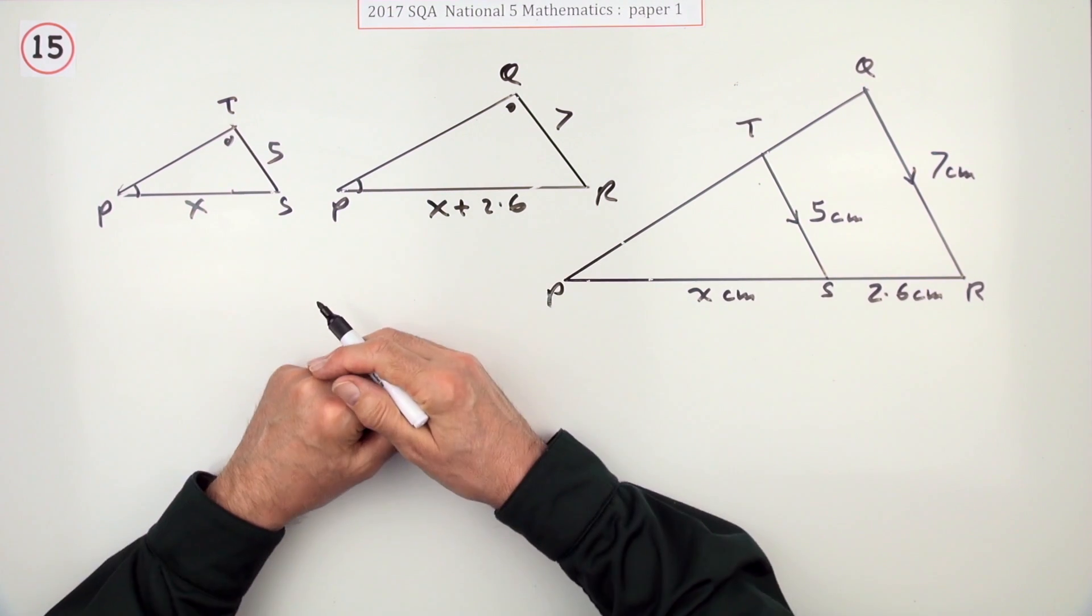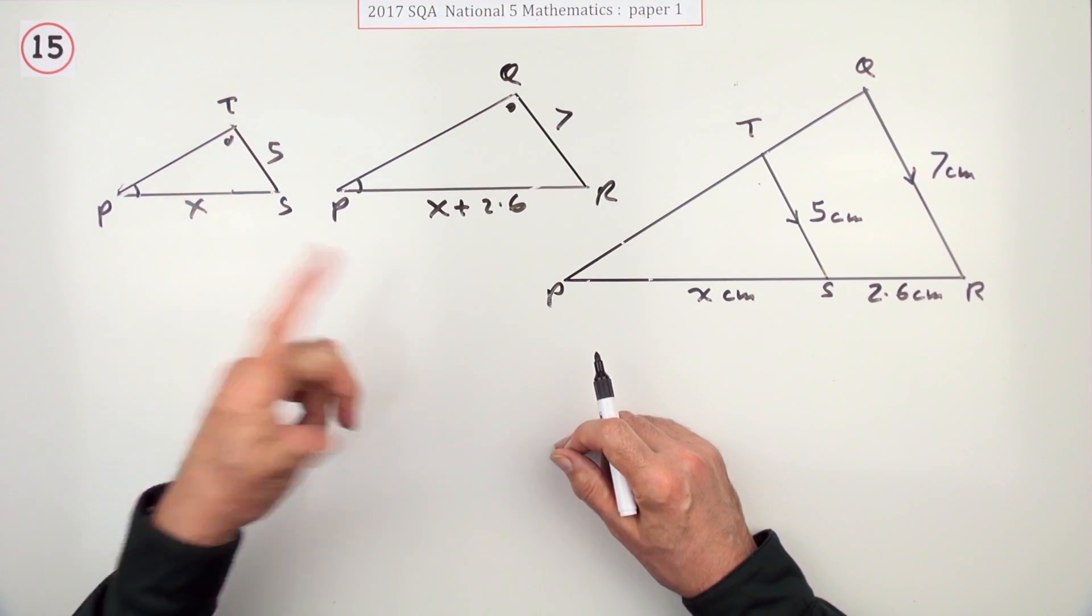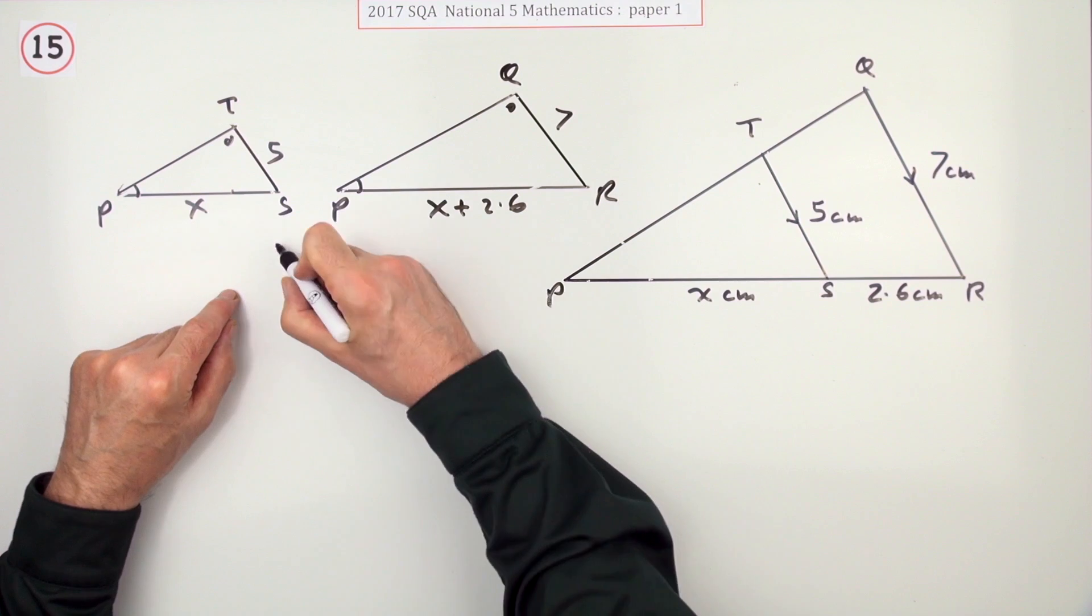Now there's various ways you can set it out. You can just set it out as ratios. This over that equals this over that. You can do that. Or you might set it out as, what's the ratio here? The ratio of the triangles is 5 to 7.